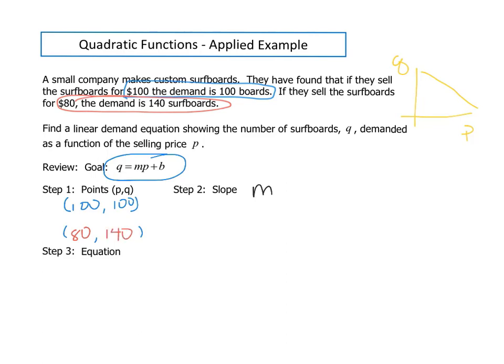Our slope, using that change in Y over change in X, we're taking our change in our Q over our change in our P, is going to be 140 minus 100 over 80 minus 100.